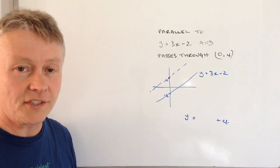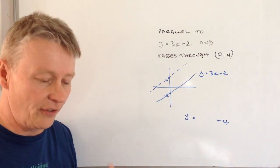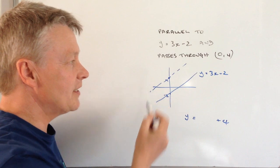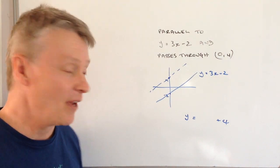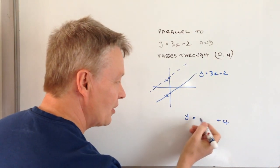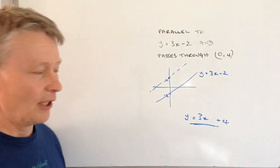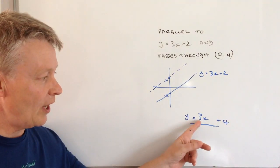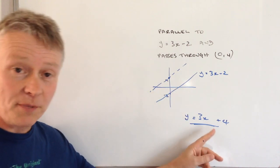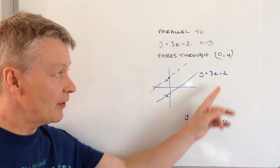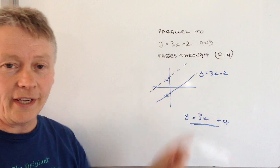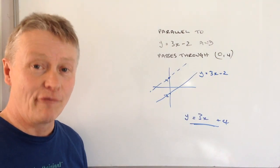With parallel lines, it's a bit like railway lines—they're an equal distance apart. So the gradient is exactly the same. To answer this question, we write y equals 3x plus 4. In other words, the gradient remains the same, but in this case it's passing through (0, 4), so the y-intercept is 4.